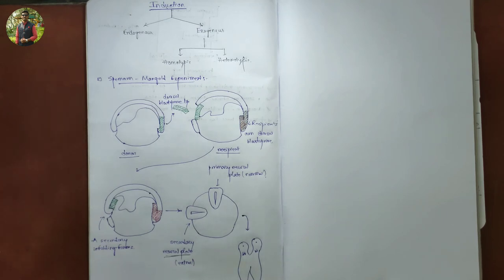Now, as the dorsal blastopore lip was able to form a secondary embryo, the dorsal blastopore lip was called a primary organizer.